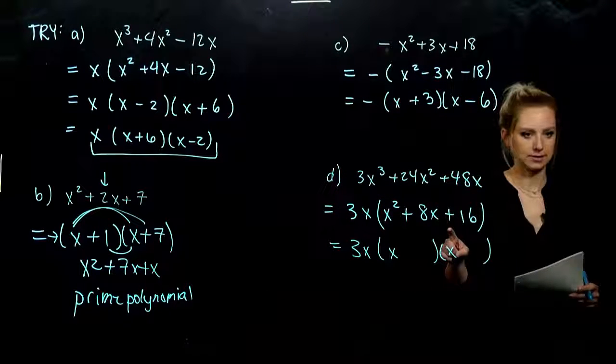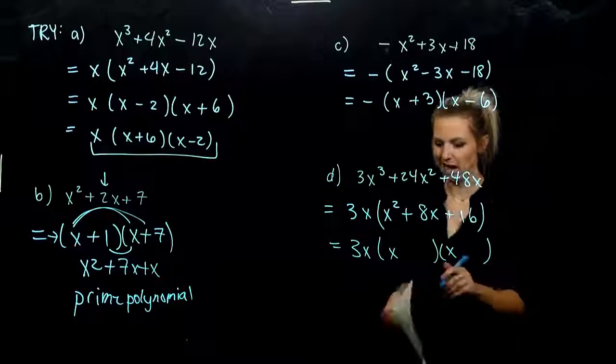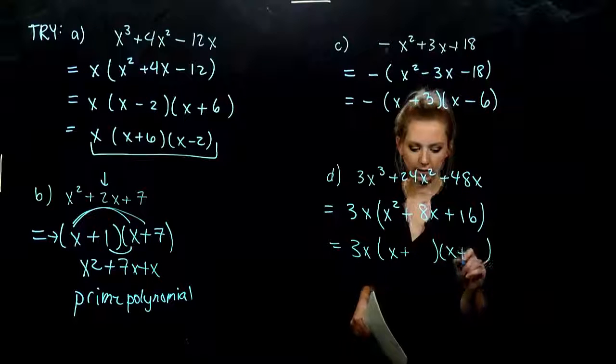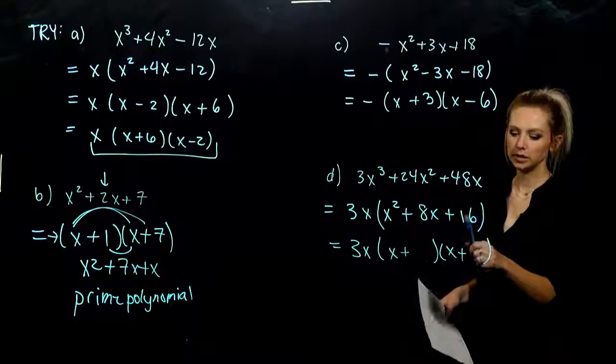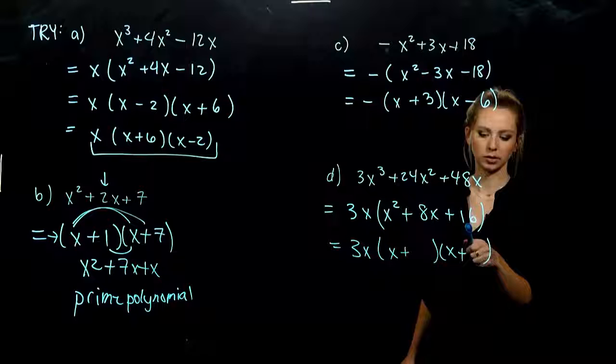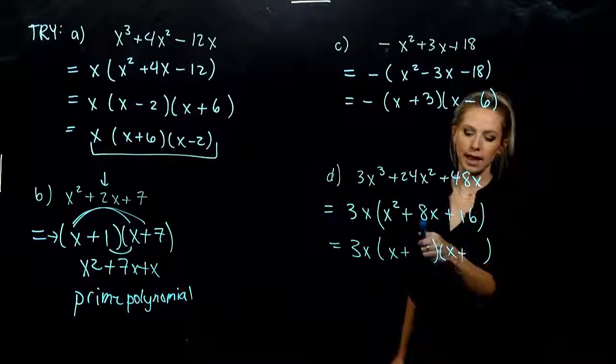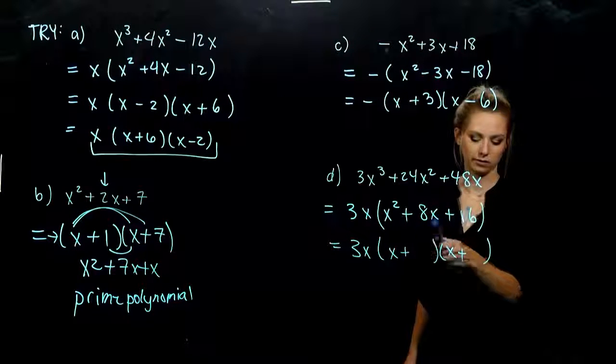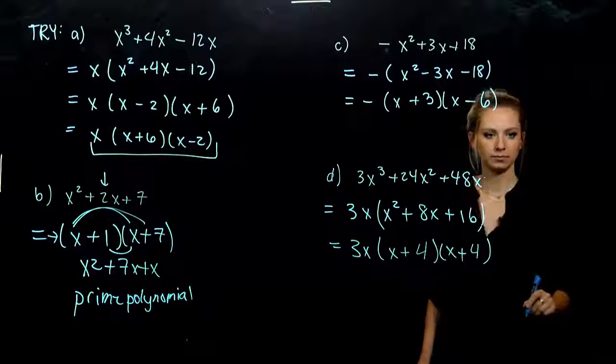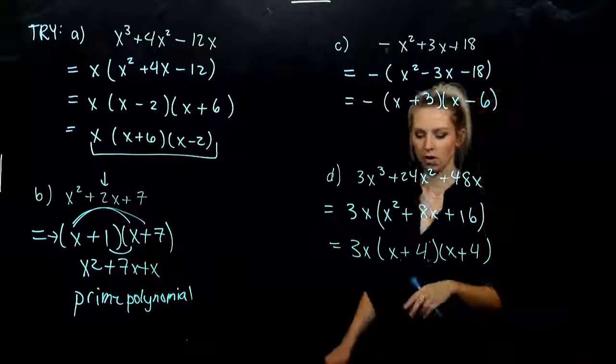And I have positive, positive. So what does that tell me about my signs? Both going to be positive. And we need to break up 16 into things and multiplying there, adding to 8. So it's going to be 4 and 4. It's factored as far as we can go.